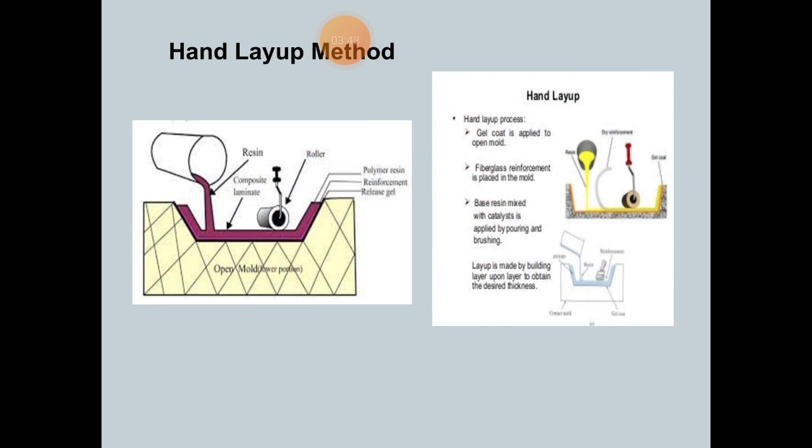The hand layup method is the most common and widely used open mold composite manufacturing process. It is a less expensive method. The mold can be simple as plastic and can have infinite curves and edges. The hand layup process is suitable for prototypes and low volume production of fiber composite materials parts.